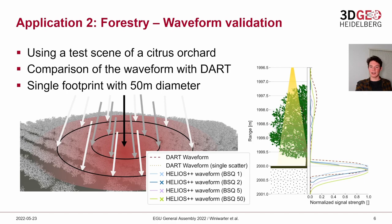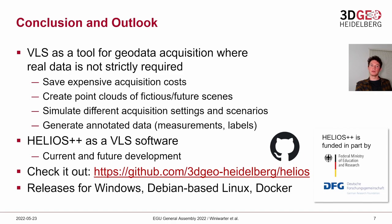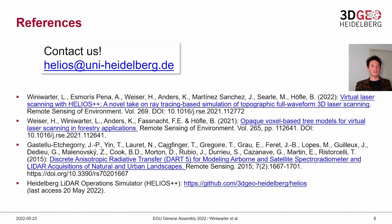To conclude, virtual laser scanning is a tool for geodata acquisition when you don't strictly require real data. You can save on expensive acquisition costs, create point clouds of future scenes using sensors that may not exist yet, simulate different acquisition settings, and generate annotated data such as measurements like DBH or class labels for every point. Helios++ is such a virtual laser scanning software, with ongoing development. Releases are available for Windows, Debian-based Linux systems, and Docker on our repository. If you have any questions, feel free to contact us at helios@uni-heidelberg.de. Thank you for your attention.